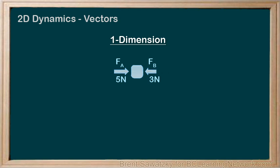First, our free-body diagram is nice and simple: FA or 5 newtons to the right, and FB or 3 newtons to the left. Then, Fnet equals MA, where Fnet is the addition of all our forces — in this case, FA plus FB. This is a vector addition, and some people would put lines over the forces to remind themselves that this is a vector addition.